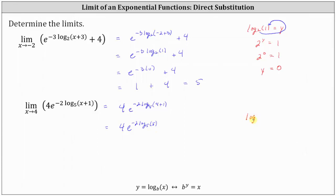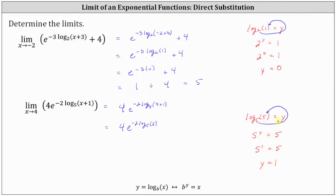Let's review why. We take log base five of five and set it equal to y, writing the log equation as an exponential equation. Remember, a logarithm is an exponent. We have five to the power of y must equal five. We recognize that five to the first is equal to five, and therefore y is equal to one, and y is equal to log base five of five.